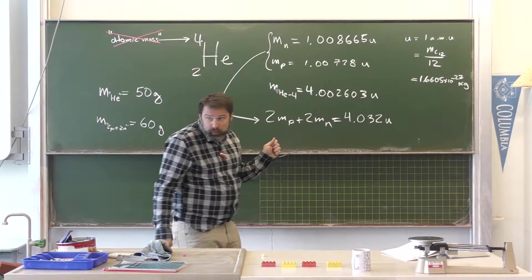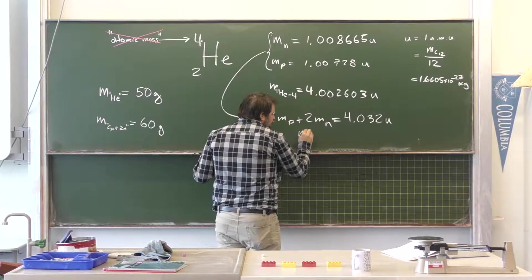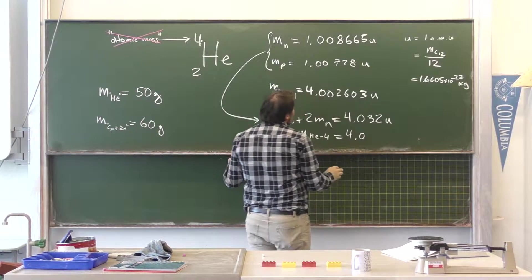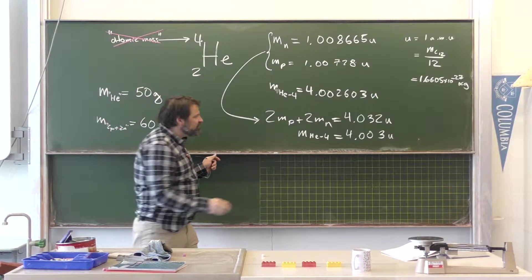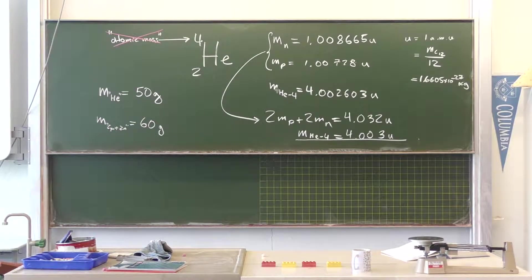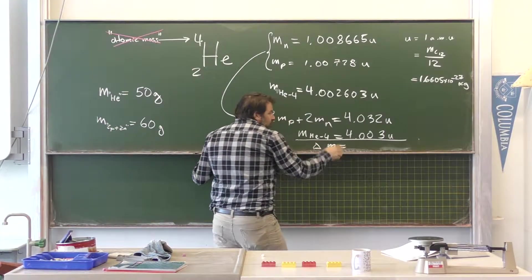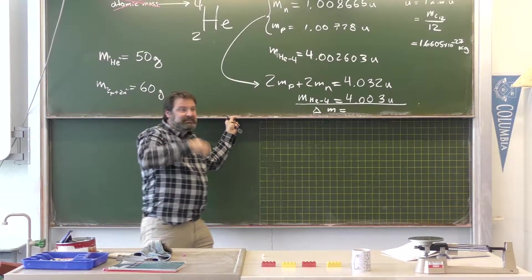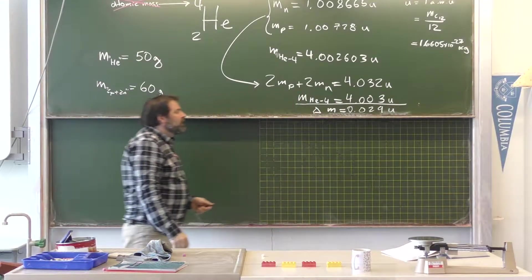And again, it rounds to 4, but it's not 4. And that's actually really important. Because if you compare to that, that's the mass of helium-4, right? 4.003 u's. Yes. You see that there's a difference between those two numbers. Yes? So the mass has gone down when you put them together. And you'd find that there's a difference in mass here, delta M, which is easy-peasy. What's the difference there? 29. 29. So it would be 0.029 u.